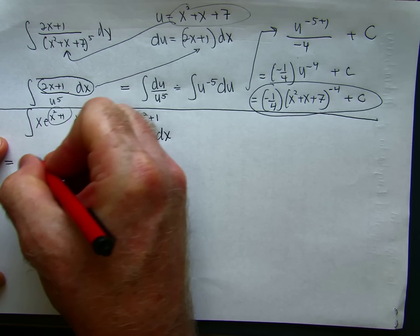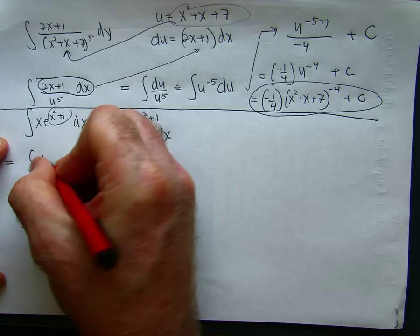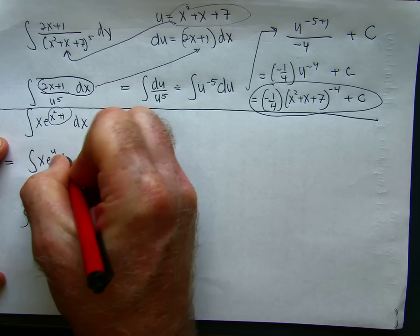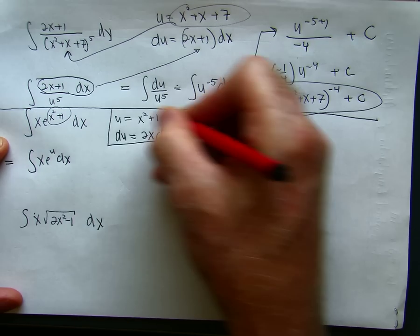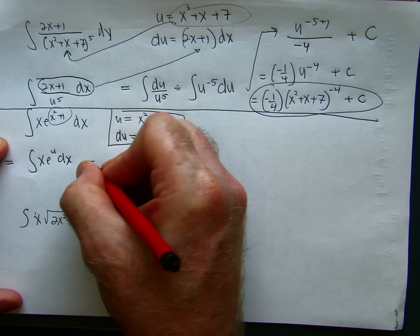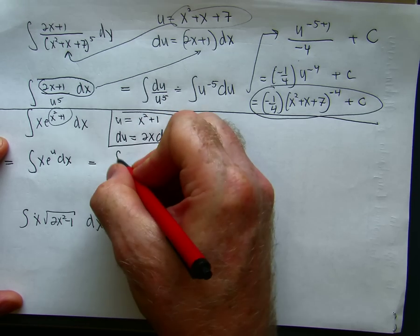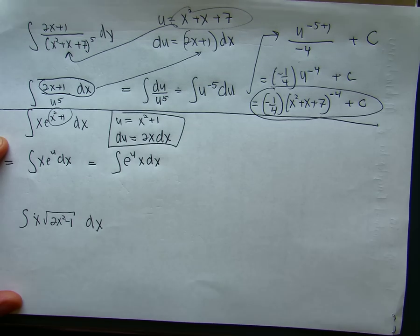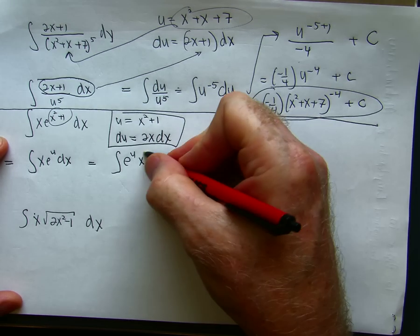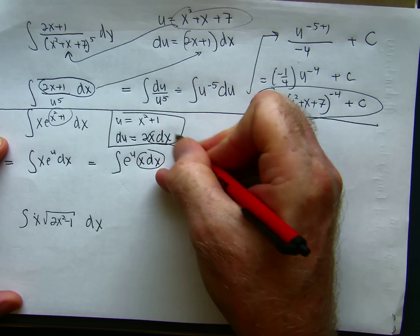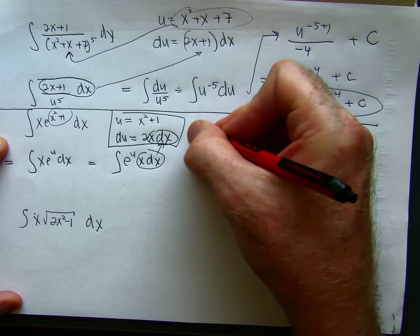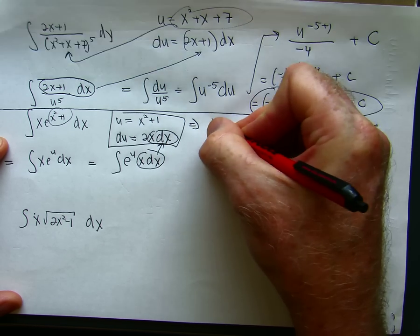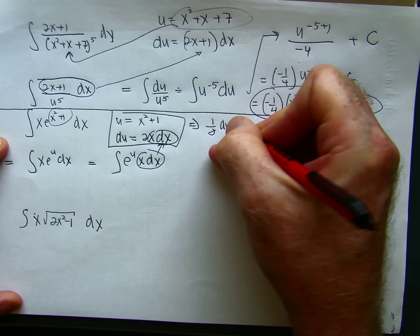So, there's my u. Let me box that off. Well, I'm going to gather all my x terms. So I get e to the u times x dx. I need to get rid of x dx. That's right here. Same thing. So this tells me that 1 half du is equal to x dx.